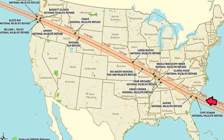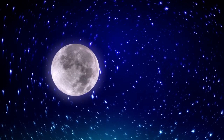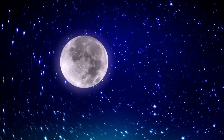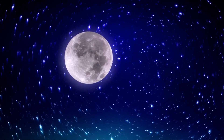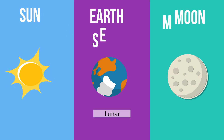Here's the path of the 2017 solar eclipse. Notice how narrow the path is. During a lunar eclipse, the order of the celestial bodies is sun, earth, moon — or SEM.